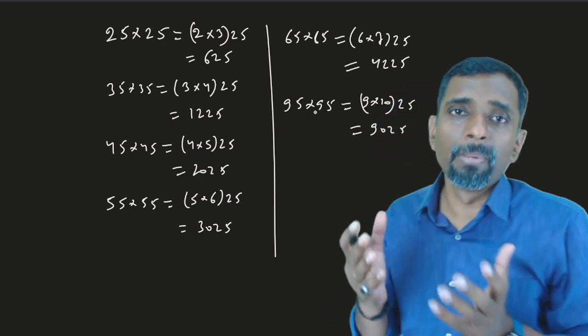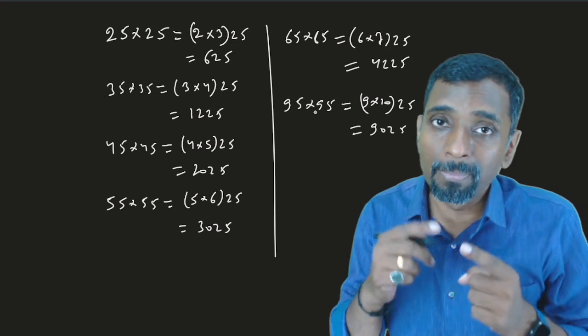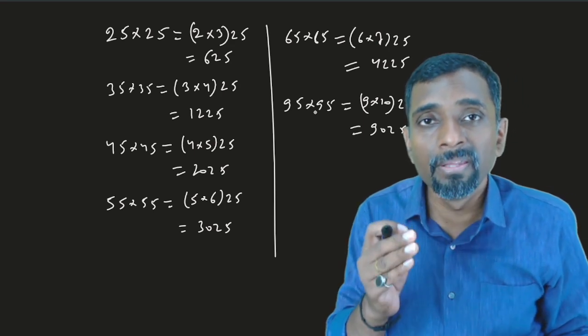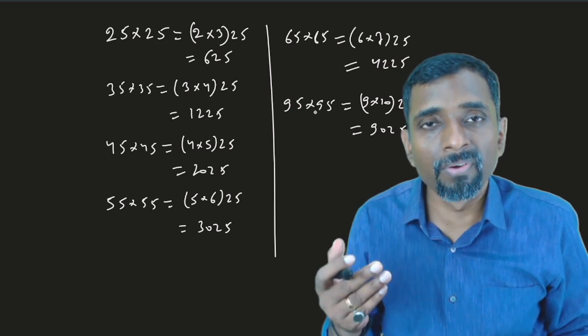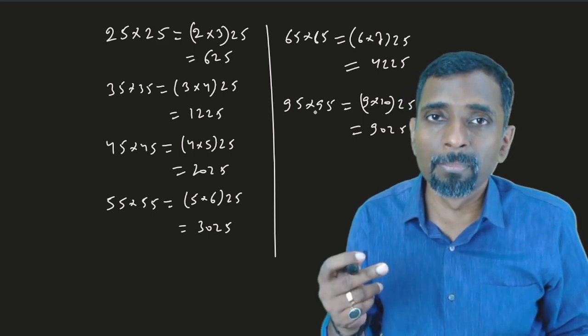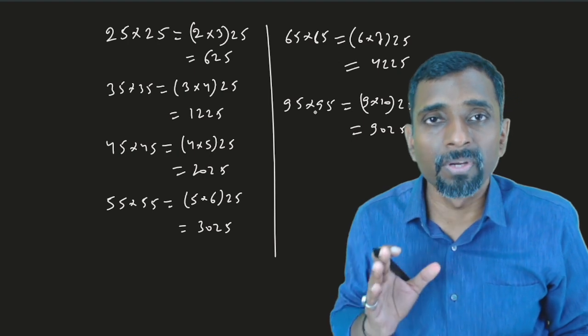This is a very simple method to solve those problems, multiplying numbers which end with 5. If the number ends in 5, you can find the square using this method.